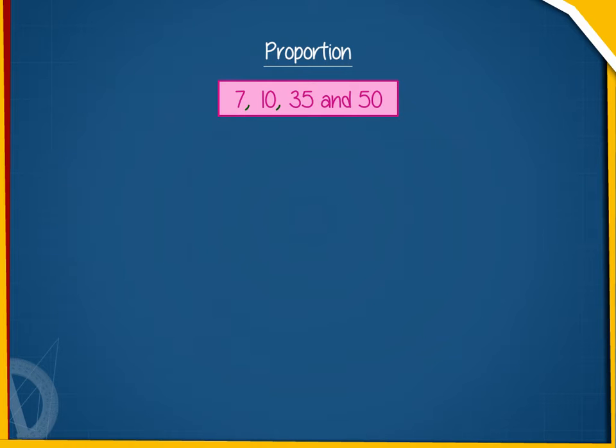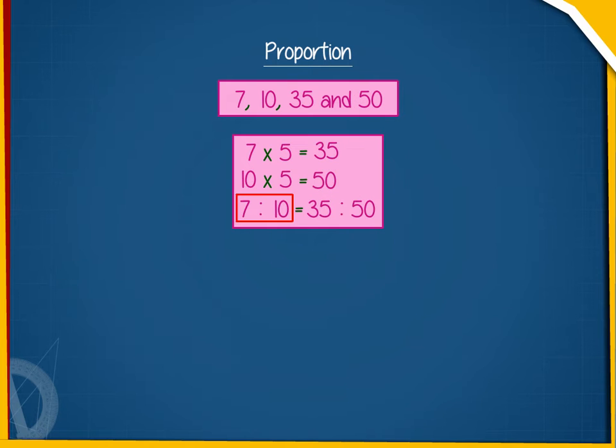Let us take the numbers 7, 10, 35 and 50. Here, these numbers are in proportion because ratio of 7 to 10 is equal to ratio of 35 to 50.